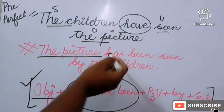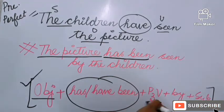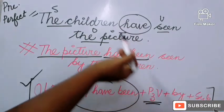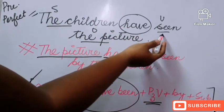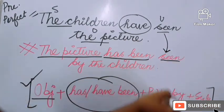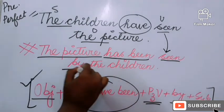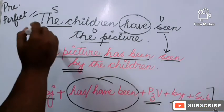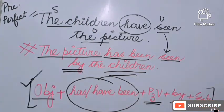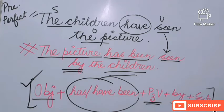Since 'the picture' is a singular number, we use 'has been.' Then comes the P3 form of the verb. In perfect tense the verb is always already in P3 form, so we just write it as it is — 'seen.' Then 'by,' and then the subject — 'the children.' So the final result is: 'The picture has been seen by the children.'